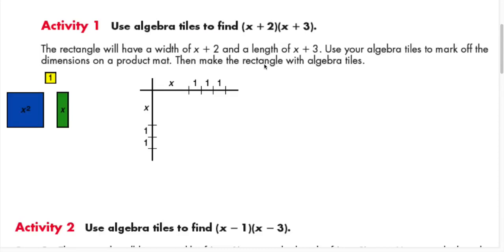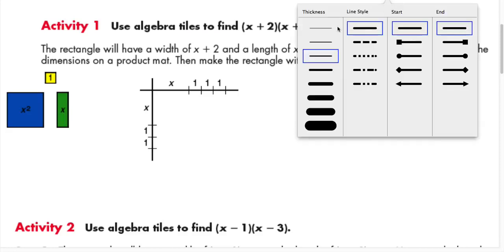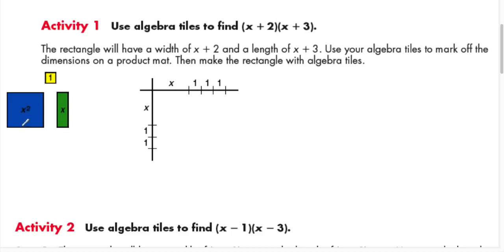We'll use algebra tiles to mark off the dimensions on a product map. A quick recall: the reason this tile is x² is because its dimensions are x by x. The x-tile has length x and width 1. The unit tile has dimensions 1 by 1. So when you have x+2 on the horizontal and x+3 on the vertical column, you're ready to multiply.